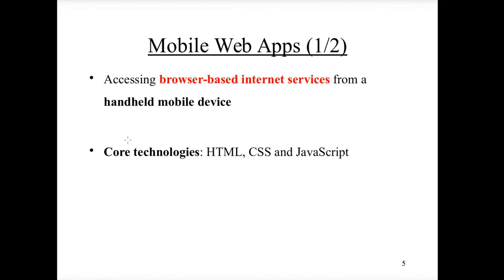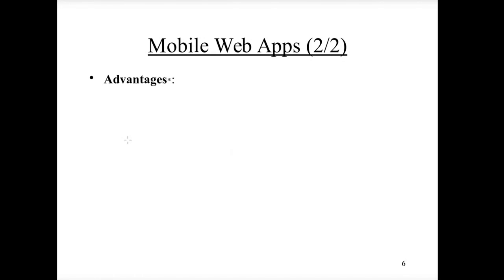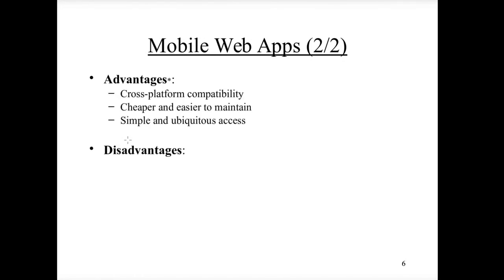A mobile web app is browser-based and designed for handheld mobile devices. The core technologies are HTML, CSS, and JavaScript. The advantages of mobile web apps include cross-platform compatibility — as long as the user has a browser — which makes them cheaper and easier to maintain since you need fewer versions of your application, and they provide simple and ubiquitous access.